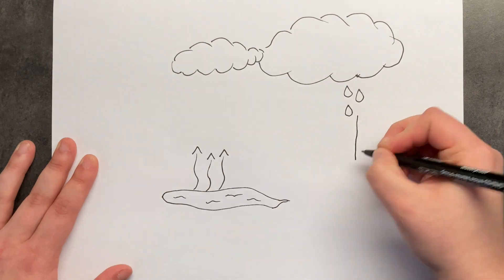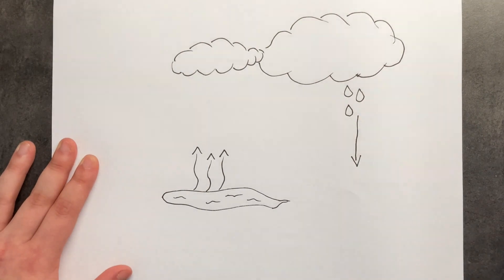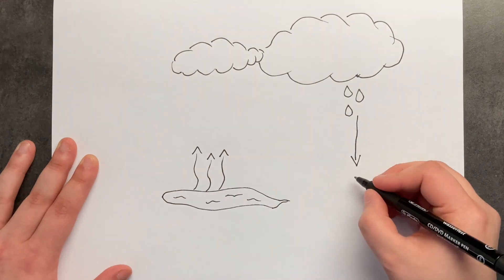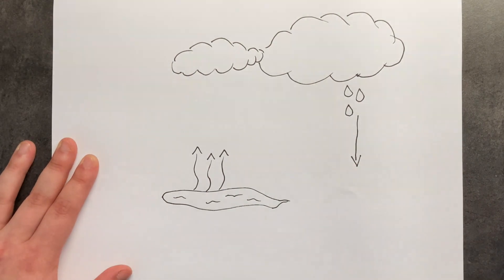So the gas condenses — this is called condensation. Gas becomes liquid again, and it rains to the ground.